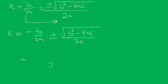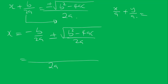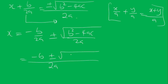Since the denominators are the same, the LCM is the same as the denominator. When denominators are the same, we add the numerators together — just as x over a plus y over a equals x plus y over a. Applying this rule, x equals minus b plus or minus the square root of b² minus 4ac, all over 2a. And that completes the derivation.